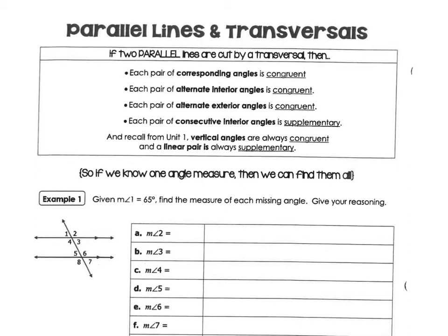We've talked about parallel lines and transversals. What you're going to need to know are these: corresponding angles, alternate interior angles, alternate exterior angles, consecutive interior angles, and vertical angles. Vertical angles are equal — for example, angles two and four would be vertical angles. A linear pair is always supplementary, so supplementary equals 180 degrees.